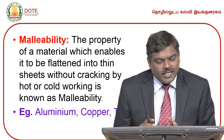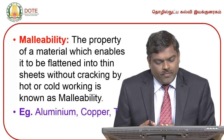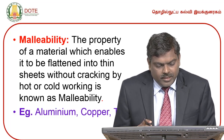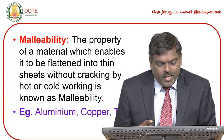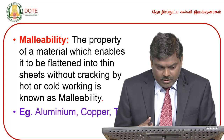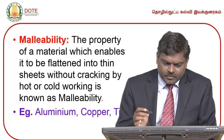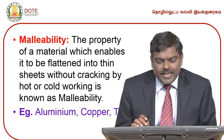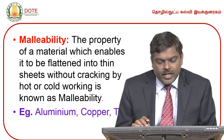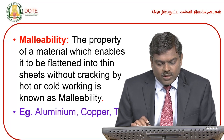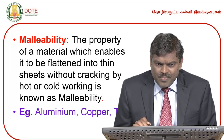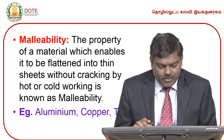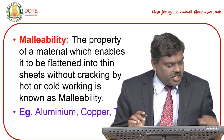Malleability is similar to ductility, but here we make materials into thin sheets rather than thin wires. The property of a material which enables it to be flattened into thin sheets without cracking by hot or cold rolling process is known as malleability. Best example materials are aluminum, copper, and tin. The output will be in the form of thin sheets.